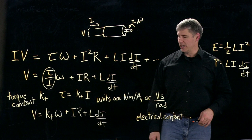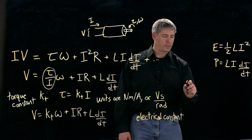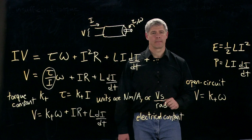And in that case, these two terms down here, IR, LDI, DT, are equal to zero. So open circuit, this equation just becomes V is equal to KT omega.